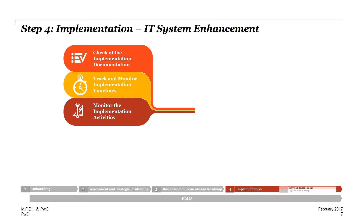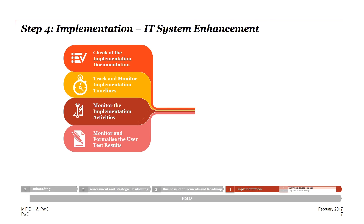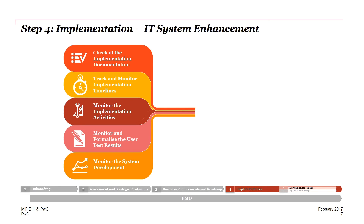It is also necessary to monitor the implementation activities from the business point of view. Our experience has shown that as soon as the IT starts to implement the business requirements, we need to check whether all business activities are completely included in the IT implementation and whether the IT department has fully understood the business changes. After implementation, it is also important to test the IT systems. Please keep in mind that it is essential to develop test cases and a milestone plan before testing. Even after road testing, documenting the entire development should still be monitored. Key deliverables of this phase are proper documentation and meaningful reporting on IT implementation and user acceptance testing.